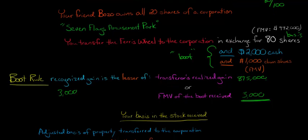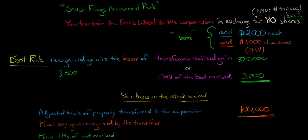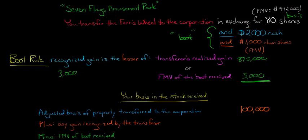Now we calculate your basis in the stock received — those 80 shares. We start with the adjusted basis of the property transferred to the corporation, which was $100,000 — the cost of the Ferris wheel. Then we add any gain you recognized as the transferor. We just calculated that you recognized $3,000 of gain because of the boot you received, so we add $3,000.